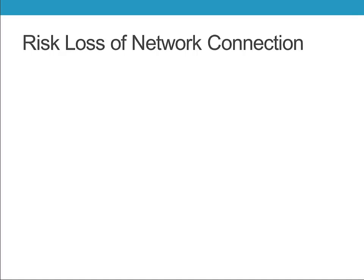Let's talk about the risk of losing the network connection. To do that, first we have to discuss the two basic types of networks. First, there's a client-server network. In that case, the server that stores the software you use for your practice management, as well as the data for that software, is actually inside the office. All computers that use the software would then need to connect to that server to access the software and to access the data.